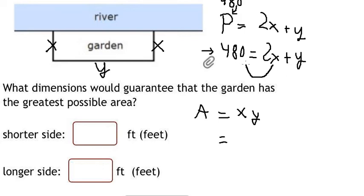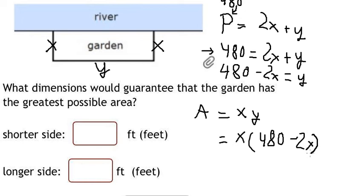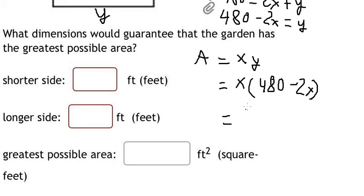So I will put 2x go to the left. We have 480 minus 2x equal to y. So for y, we need to change into 480 minus 2x. So we multiply x with 480 minus 2x. So we have 480x minus 2x to the power of 2.